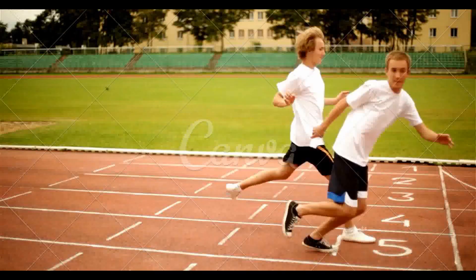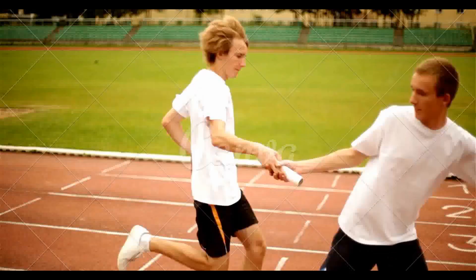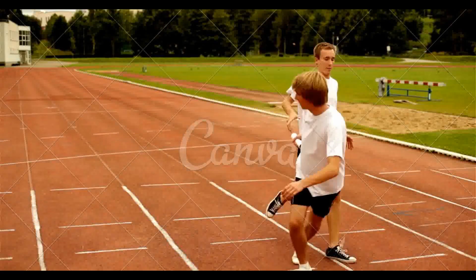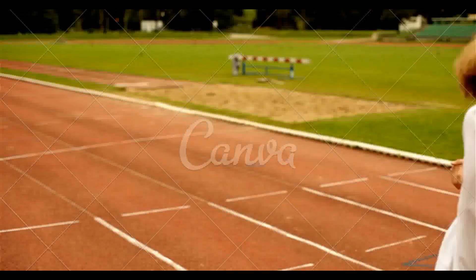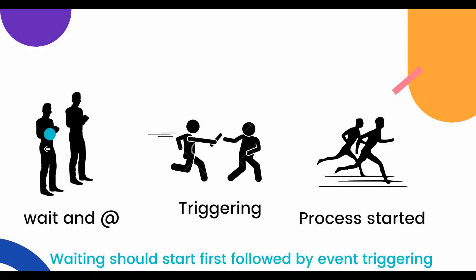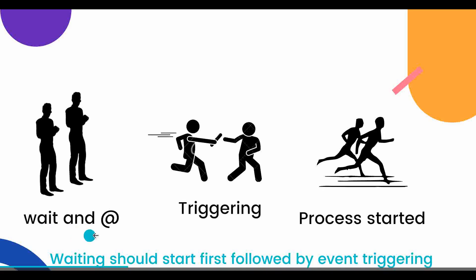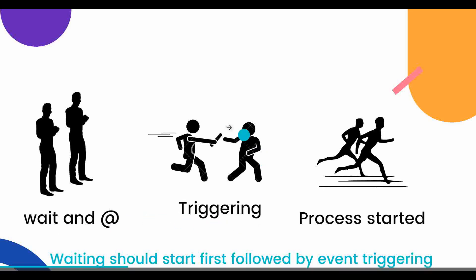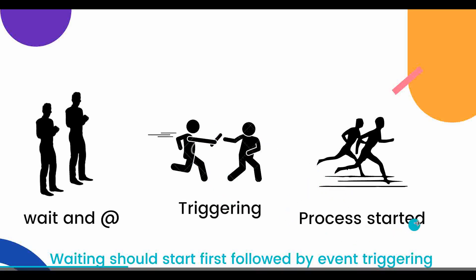Let's see the relay race analogy. In a relay race, one guy is standing to take the flag and another is coming to give him the flag — when he gets the flag he gets started. The concept of events works the same way. The guy standing is basically the wait statement, and the transfer of the flag is the triggering portion. After triggering, the processes that need to be started get started.